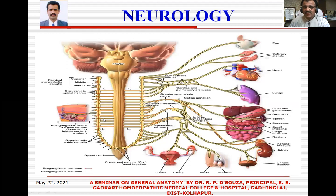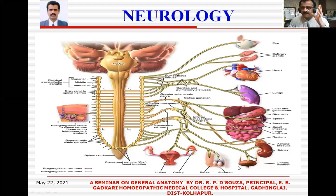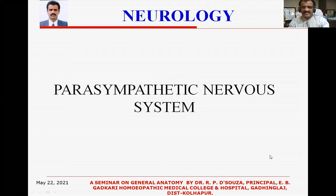You can see the sympathetic chain — it looks like a golden chain. Try to understand how it is formed from T1 to L2, and see how the sympathetic nerves are formed. You can also see the various ganglia, the cardiac and pulmonary plexuses going to the heart and lungs, and how the reproductive organs are also supplied by the sympathetic system. With this, let us end the sympathetic nervous system and go to the parasympathetic nervous system.